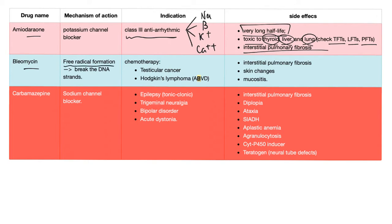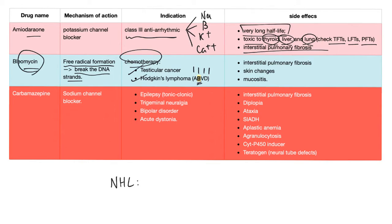Bleomycin works by free radical formation to break the DNA — that's why it's an excellent chemotherapeutic, used in testicular cancer and Hodgkin's lymphoma. Remember, for Hodgkin's lymphoma we use the ABVD regimen, where B stands for bleomycin. This is in contrast with non-Hodgkin's lymphoma, where we use the R-CHOP regimen. Side effects of bleomycin: interstitial fibrosis, skin changes, and mucositis.